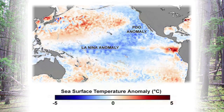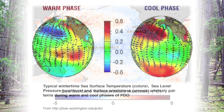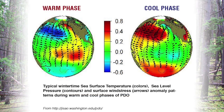Ocean surface temperatures vary across wide expanses and in turn influence climatic patterns. When we experience a warm phase across the northwestern United States from the Pacific Decadal Oscillation, actually the north Pacific is cold, which creates a low pressure circulating counterclockwise, drawing warm air from California up across Montana.